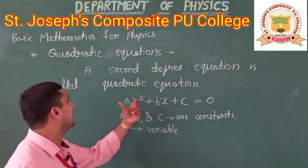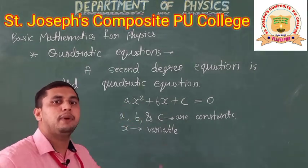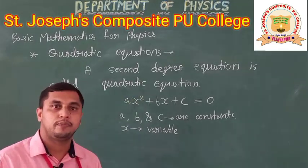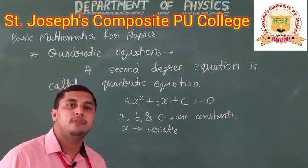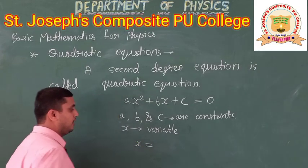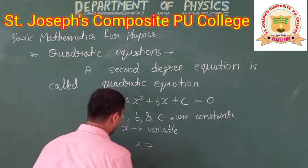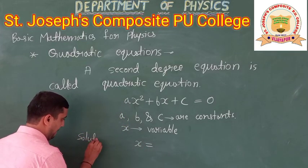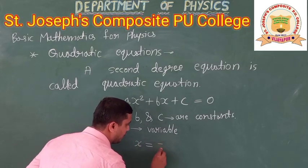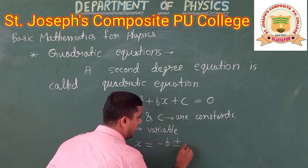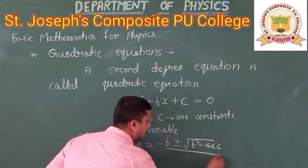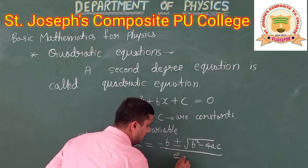Now, how to solve this quadratic equation — particularly by using the formula. The solution for this quadratic equation gives us the value of X. The formula is X equals to minus B plus or minus the square root of B² minus 4AC, divided by 2A.